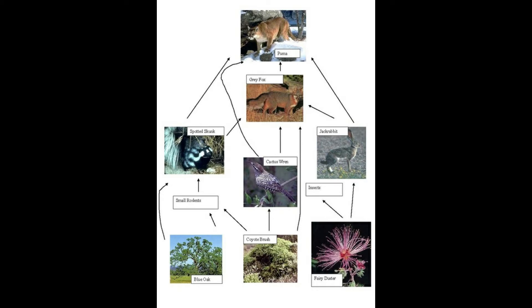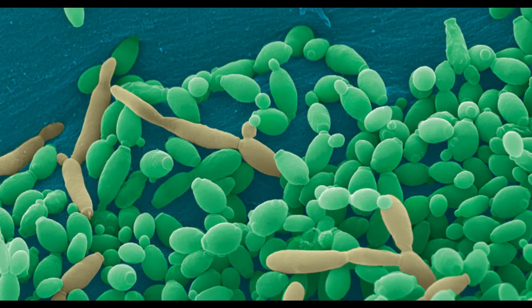Now I will describe an example of a trophic food web in the chaparral. The producers are photosynthetic organisms like the blue oak, coyote brush, and fairy duster. The primary consumers include small rodents, insects, jackrabbits, and some birds including the cactus wren, which is a native bird of the California chaparral. The secondary and tertiary consumers include the gray fox, bobcats, and pumas. The decomposers include basic fungi and bacteria.